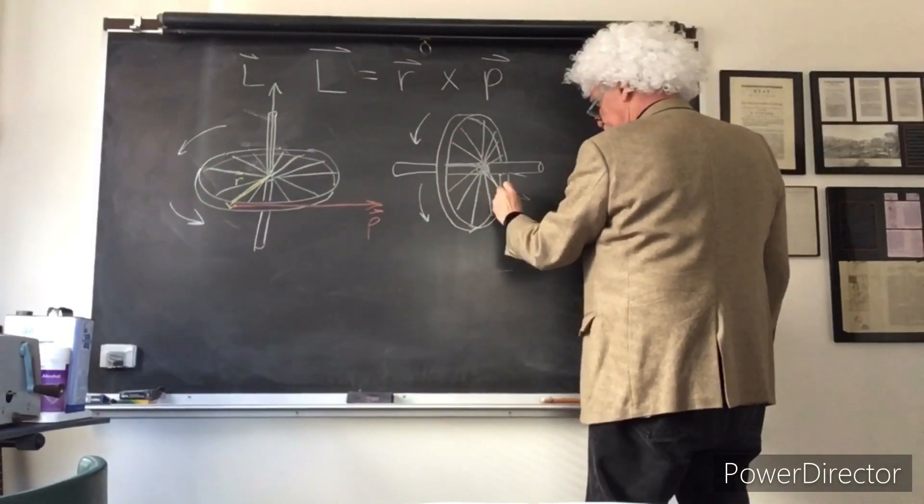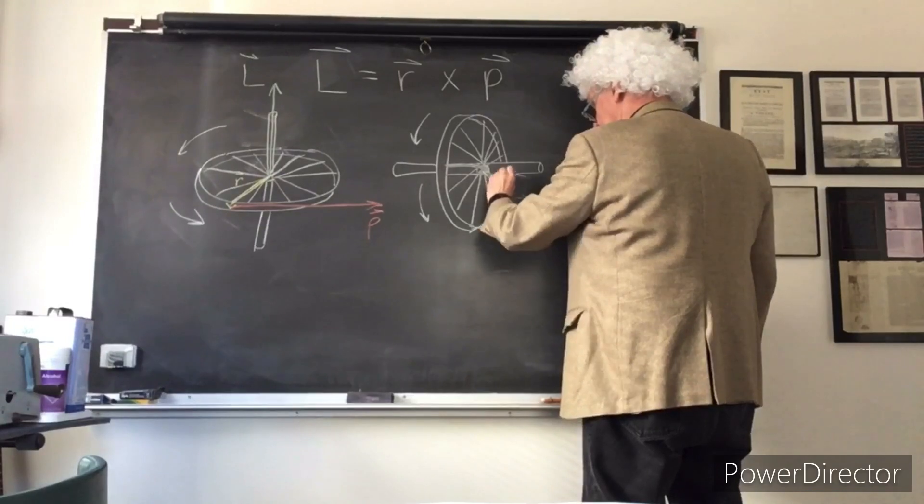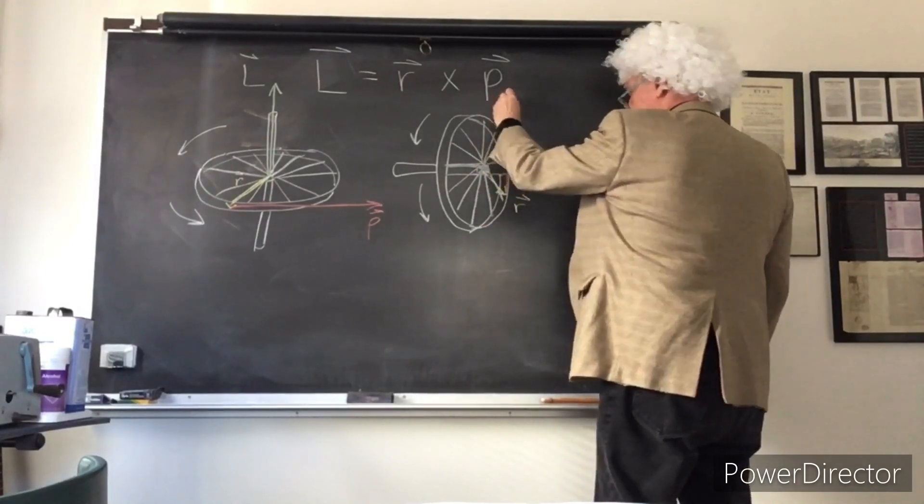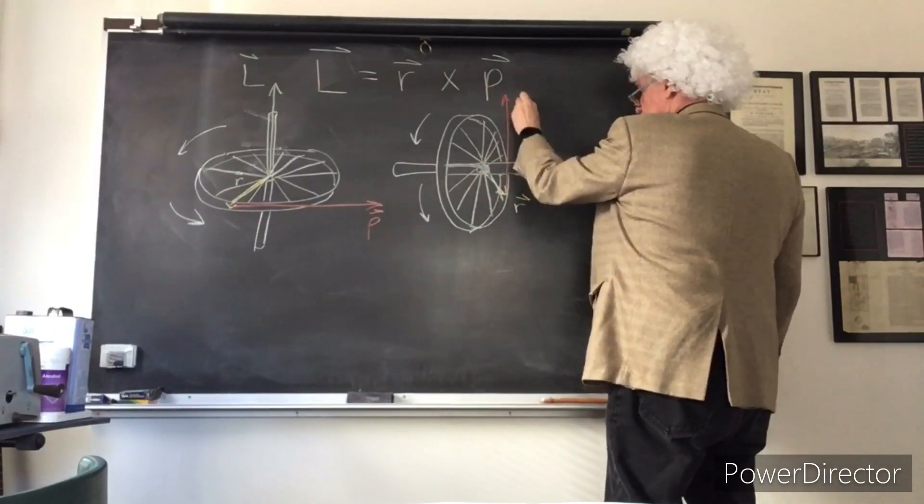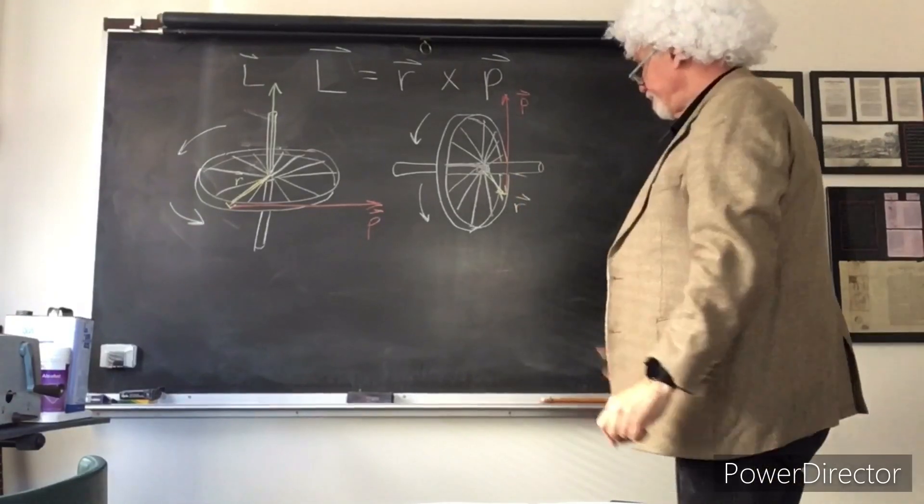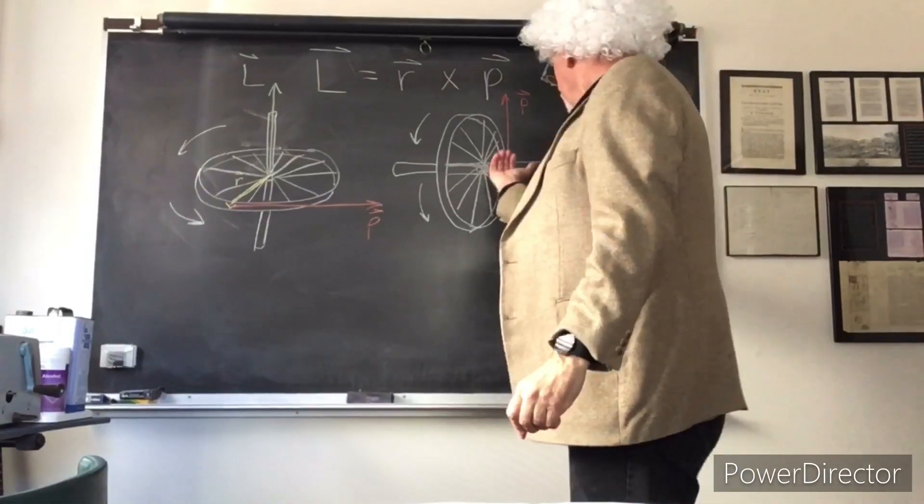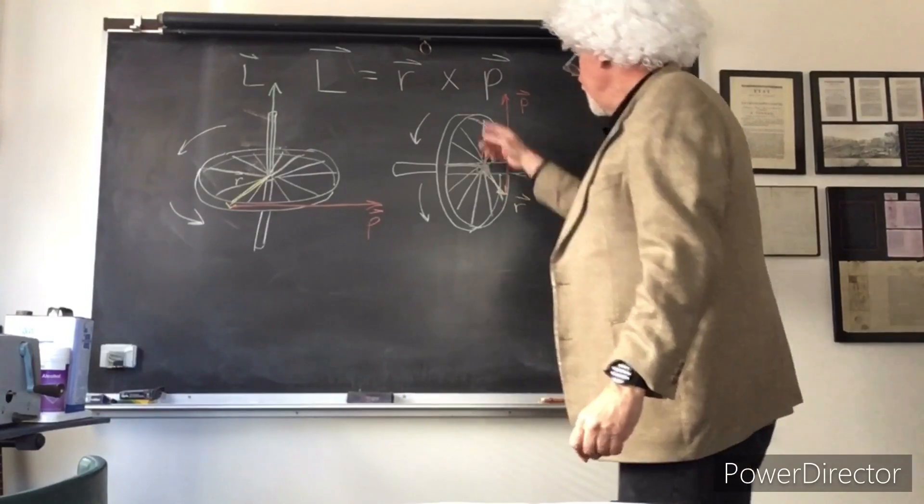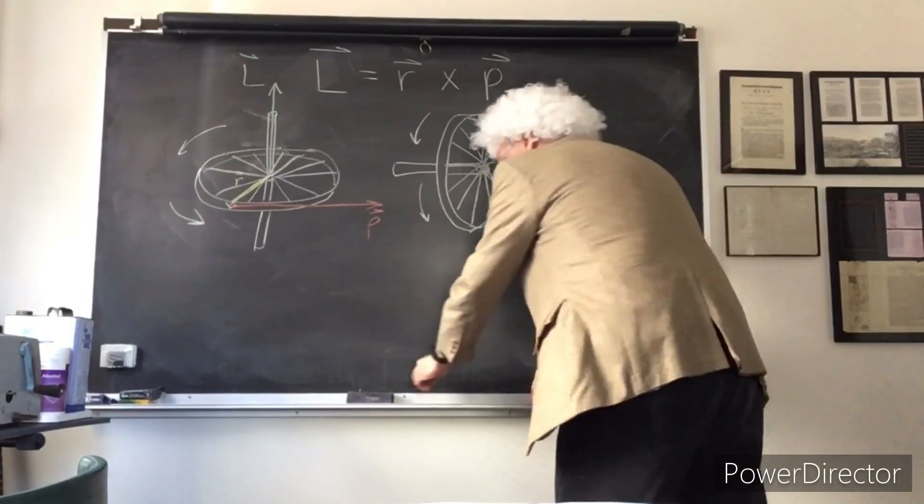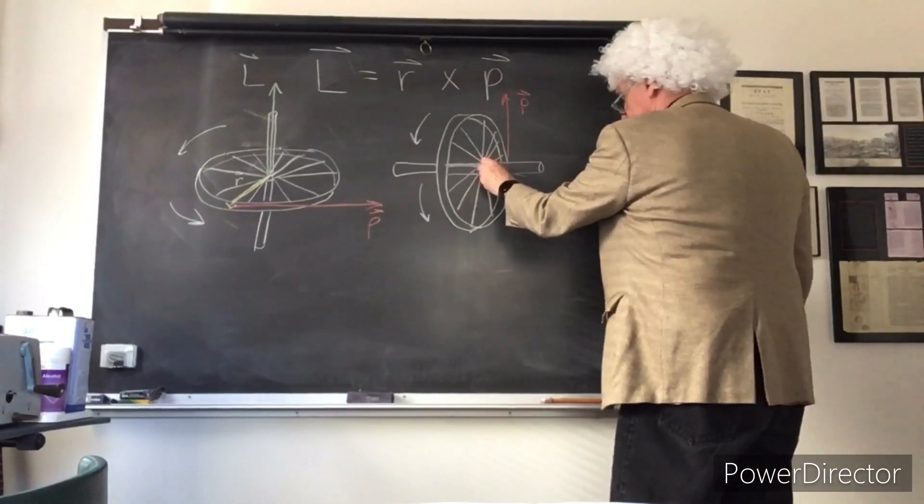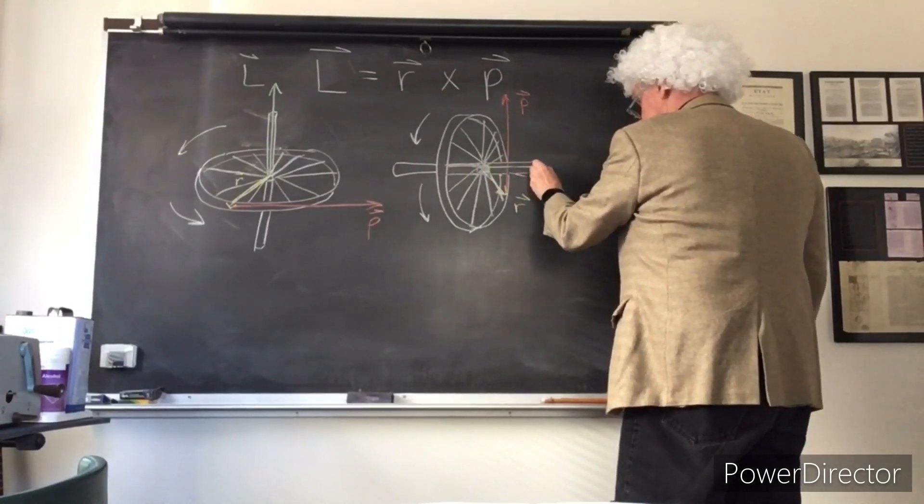Alright, so then it's spinning this way and so this crossed with this and then the momentum vector is actually again acting along the axis of rotation here.